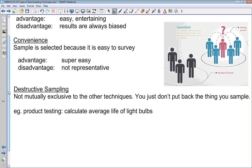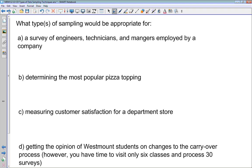Those are the basic types of techniques for choosing a sample. Let's apply them a little bit here. Based on this, what type of sample do you think would be appropriate for each of the following situations? You want to do a survey of engineers, technicians, and managers that are employed by a company. What sort of sampling technique do you think you would use? What do you think, Cal?